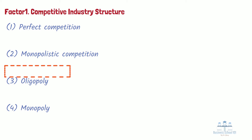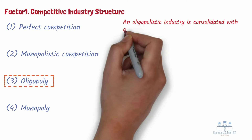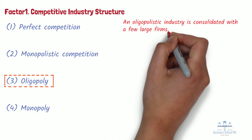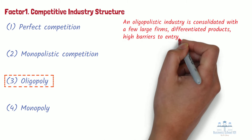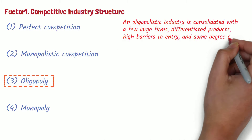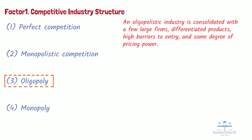Third, oligopoly. An oligopolistic industry is consolidated with a few large firms, differentiated products, high barriers to entry, and some degree of pricing power. The degree of pricing power depends, just as in monopolistic competition, on the degree of product differentiation.